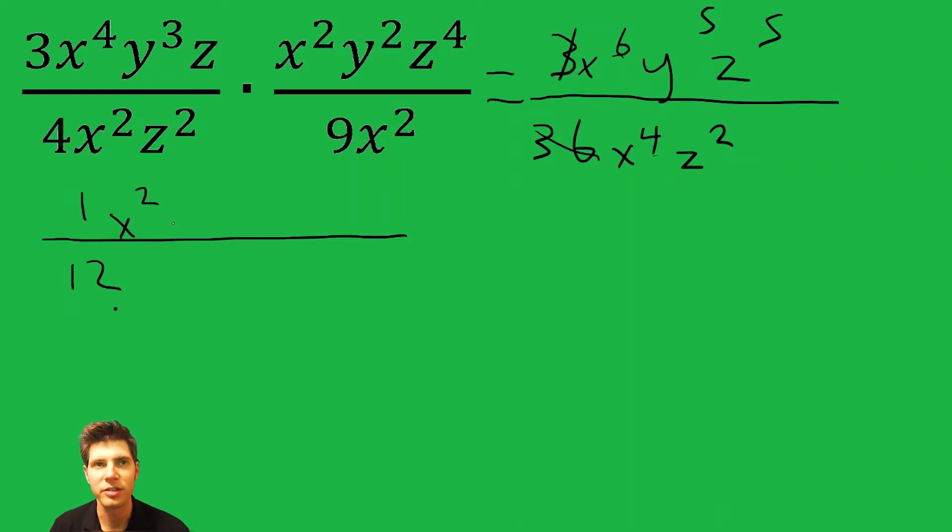So the y doesn't have anything else on bottom, so it's just y to the 5th. And the z, this one we can just do 5 minus 2, which is 3.